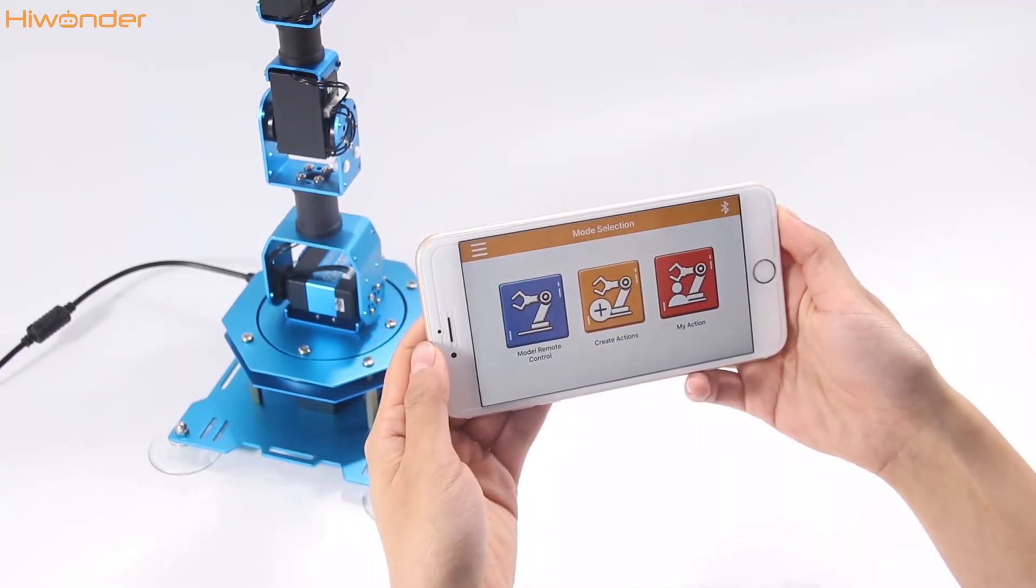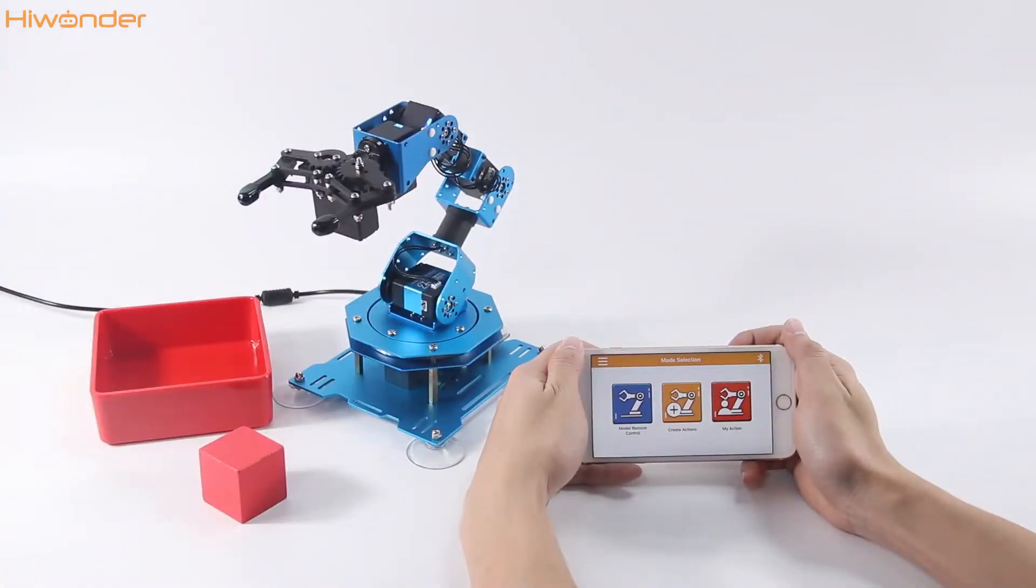Let's come to the next part. In the programming action video, we created an action, namely number 20, to pick up the block. And now we can use the custom function to run the pick up action group with your mobile phone app.